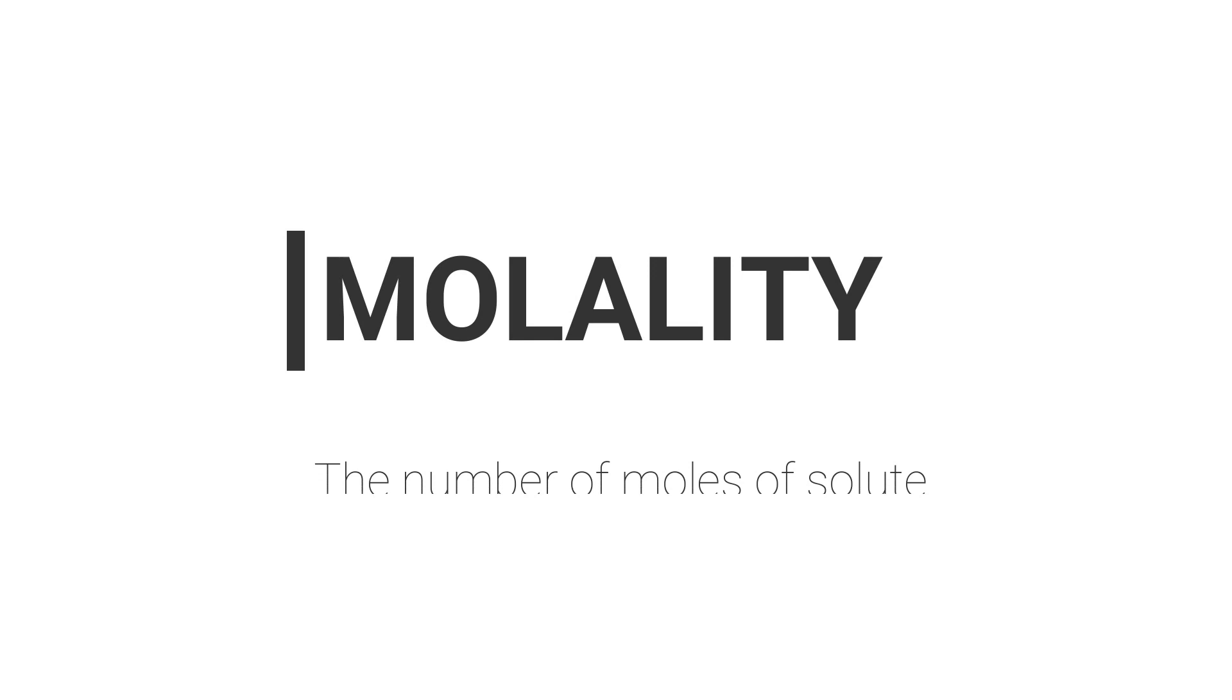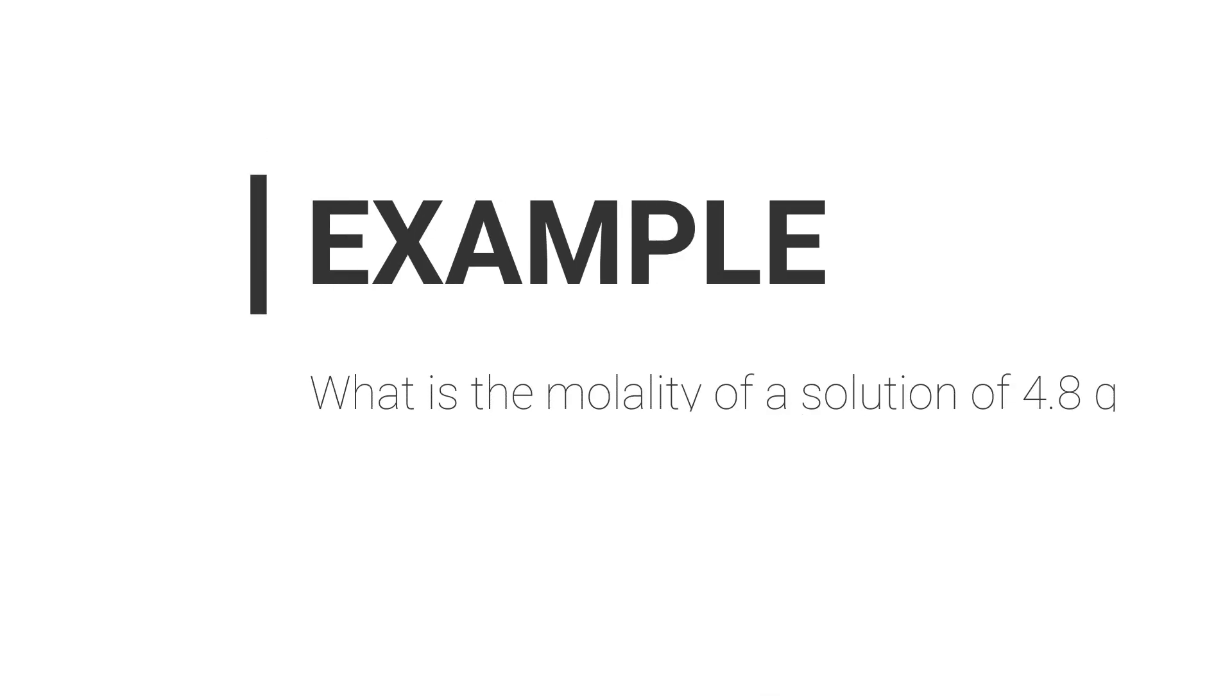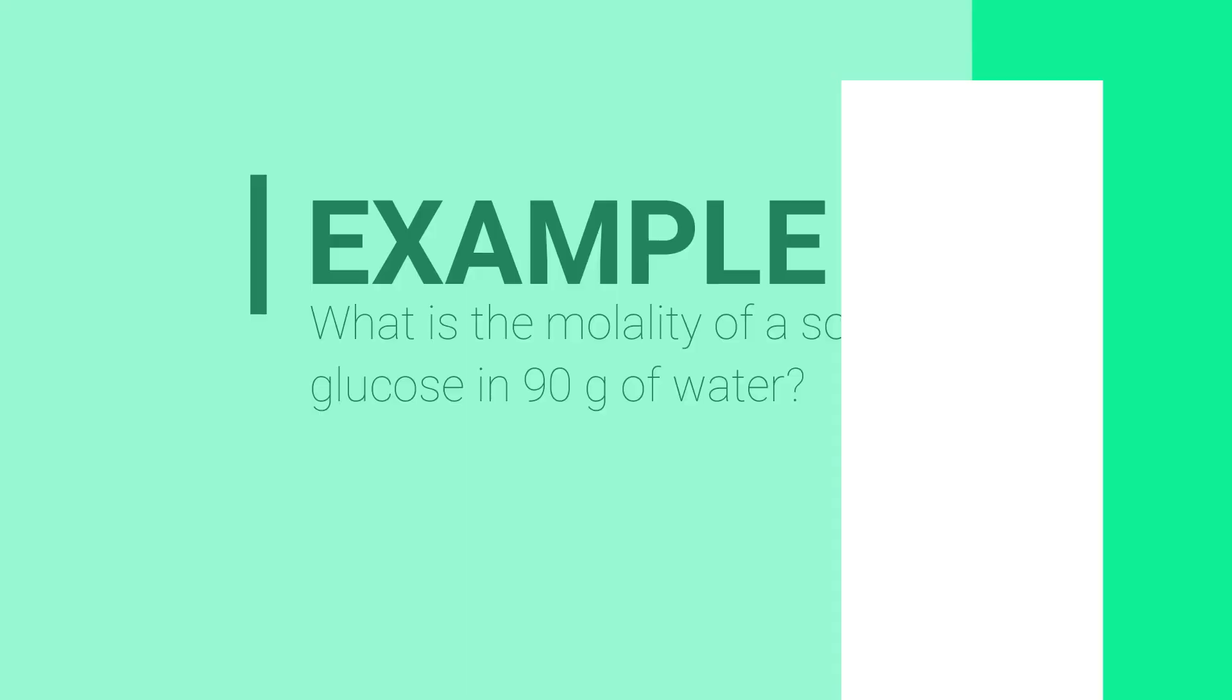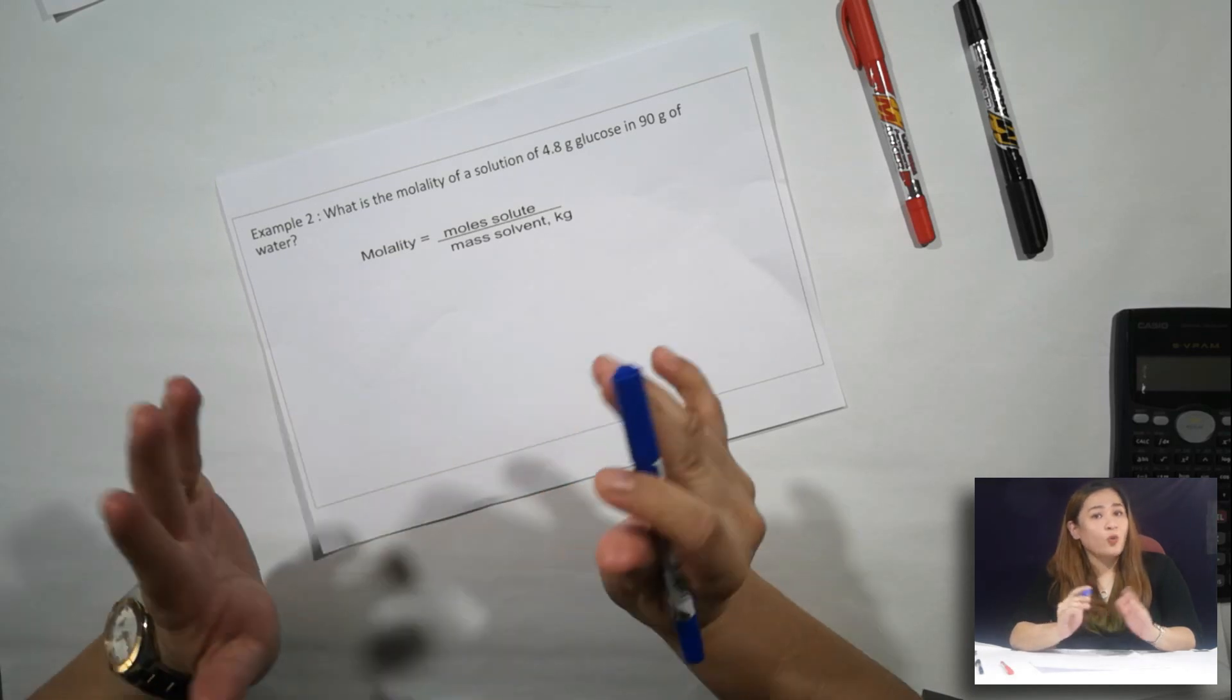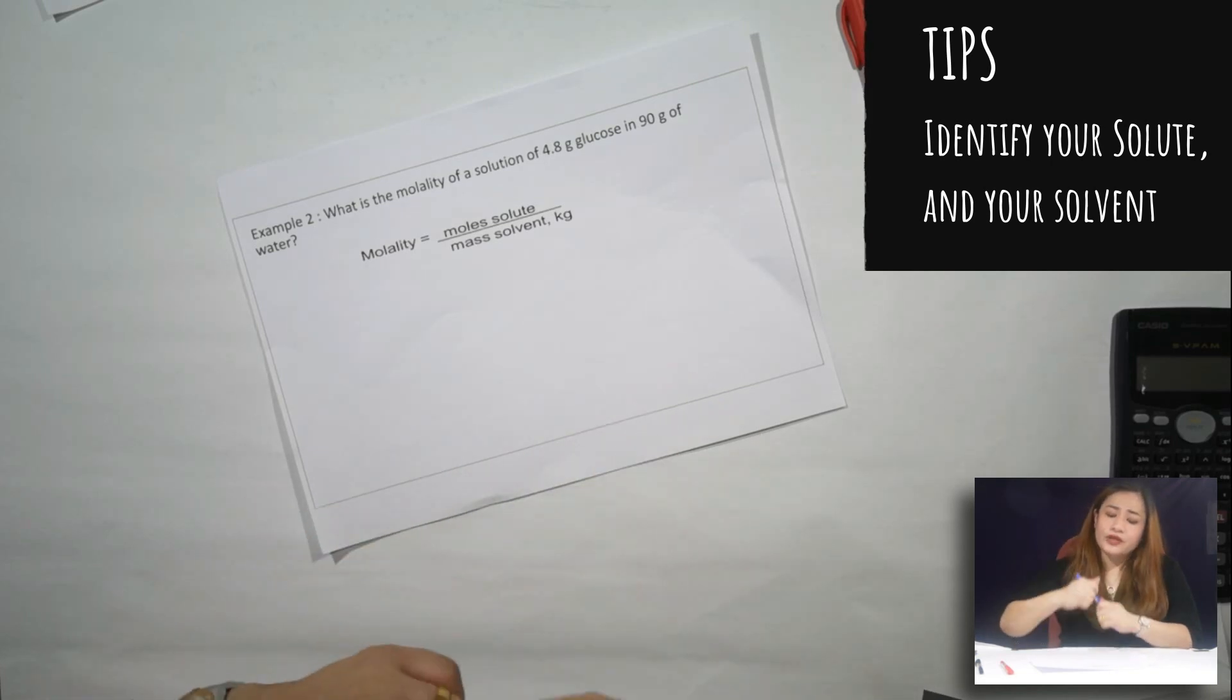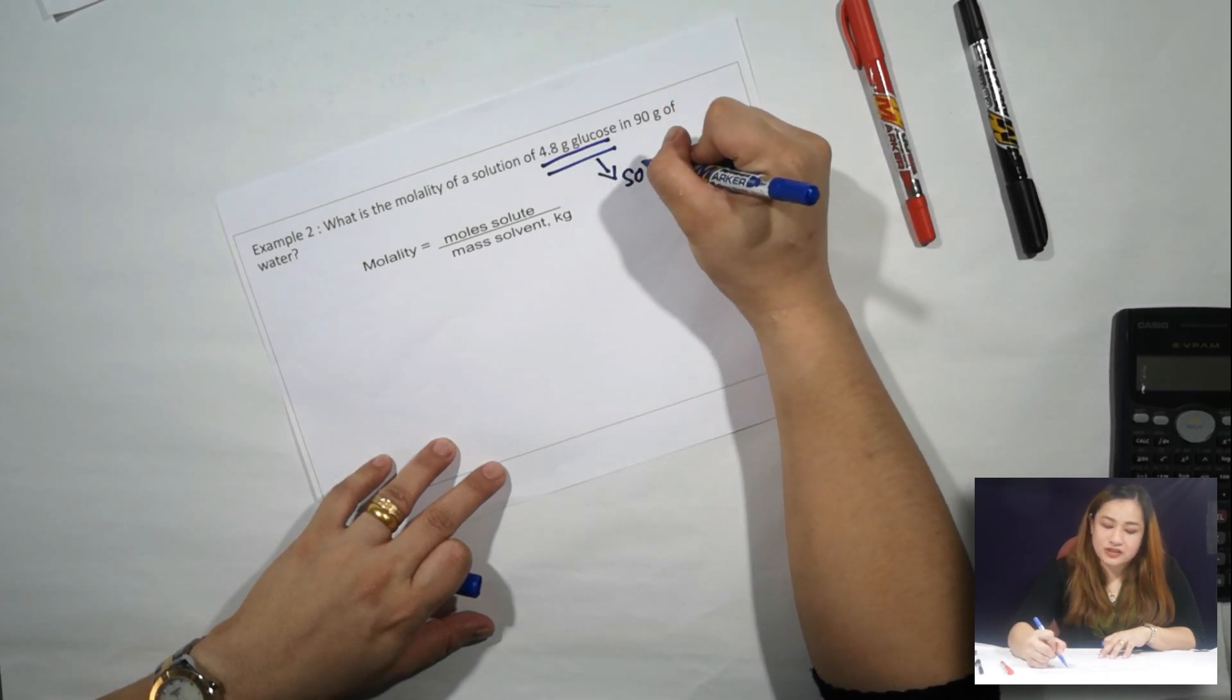Molality is defined as the number of moles of solute per kilogram of solvent. What is the molality of a solution of 4.8 grams glucose in 90 grams of water? When you want to do this question, first you need to identify which one is your solute and which one is your solvent. So your solute will be the 4.8 grams of glucose.